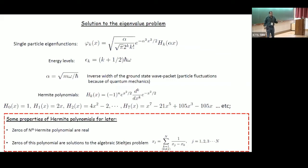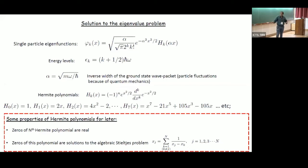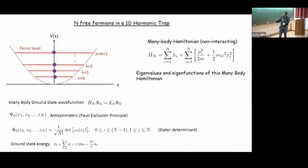There is a problem called the Stieltjes problem: you have x₁, x₂, ..., xₙ, and the equation xⱼ = Σₖ 1/(xⱼ − xₖ) for k ≠ j. This is a complicated coupled algebraic equation, but it turns out that the solution to the Stieltjes problem is also the zeros of the Hermite polynomial. Take three values, solve the problem, and calculate zeros of the third-order Hermite polynomial — they match.